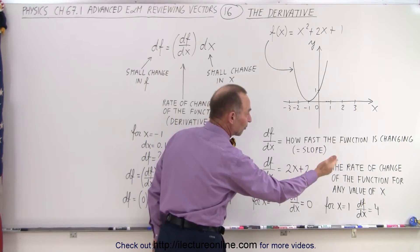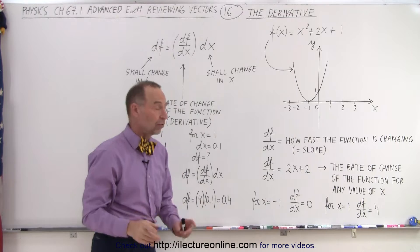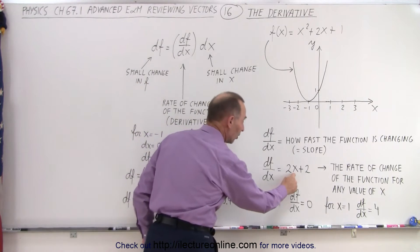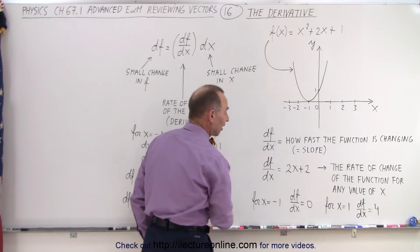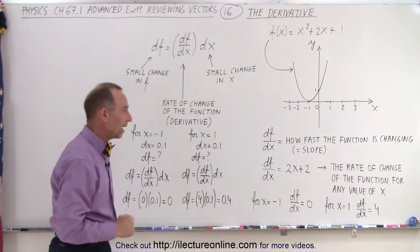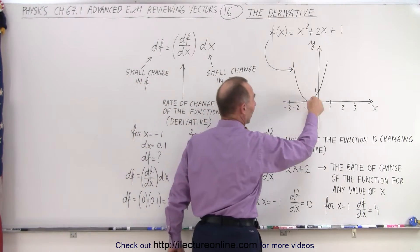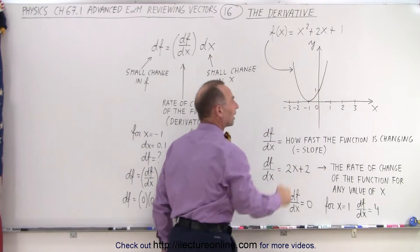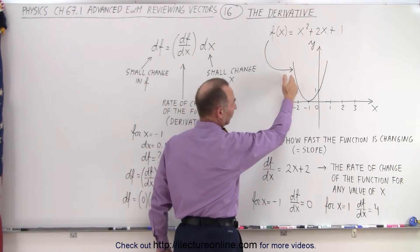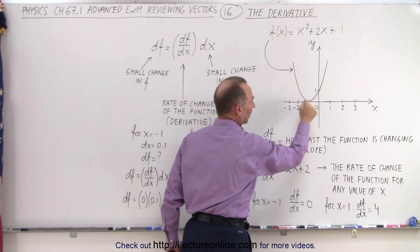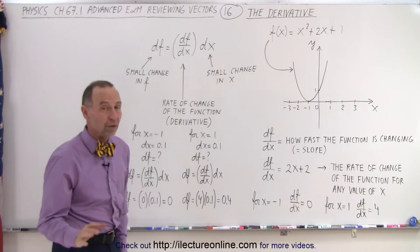Essentially, it's the rate of change of the function for any value of x. Whatever value you plug in for x, you're going to get a rate of change of that function at that value for x. So that means for different places on the curve right here, we're going to get a different slope. The slope is negative here, the slope is positive there, and it's 0 down here at the vertex.